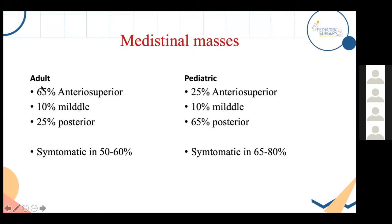Comparing pediatric and adult mediastinal masses: in pediatrics, most masses are in the posterior mediastinum, accounting for about 65%, while in adults most are in the anterior mediastinum at about 65%. Pediatric patients are also more likely to have symptoms, likely due to the narrower chest cavity and the higher prevalence of malignancy in children, which causes more invasion and symptoms.